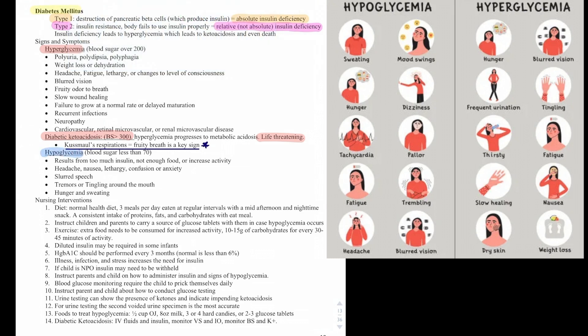Hypoglycemia is when blood sugar is low — less than 70. This results from too much insulin, not enough food, or increased activity. Signs and symptoms include headache, nausea, lethargy, confusion or anxiety, slurred speech, tremors or tingling around the mouth, hunger, and sweating.